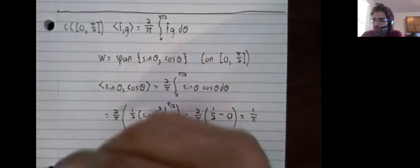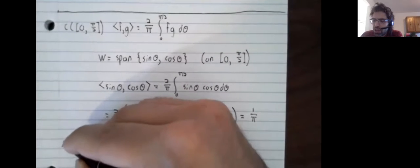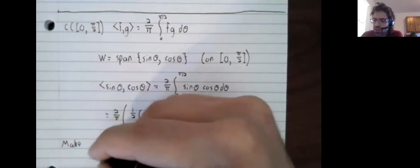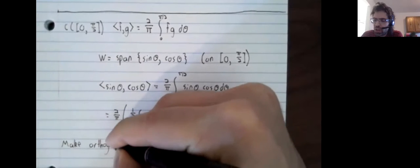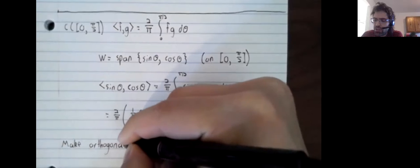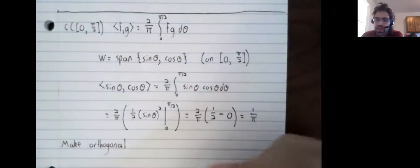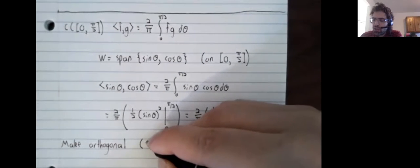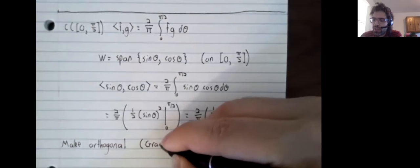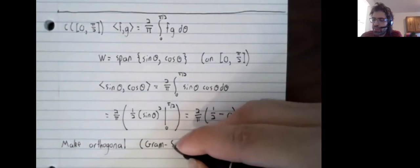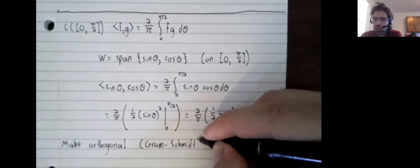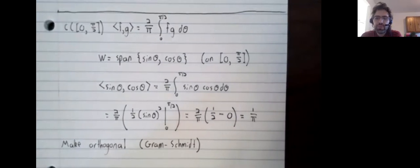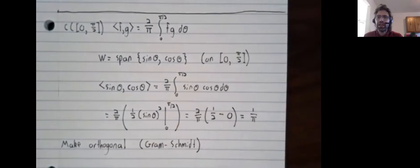We can do everything with inner products that we can do with dot products. If we had a dot product and we wanted an orthogonal basis, we could run the Gram-Schmidt process.